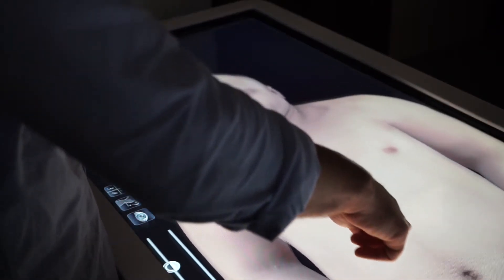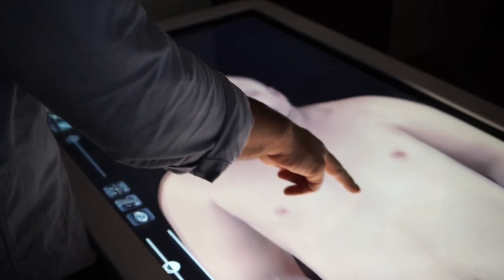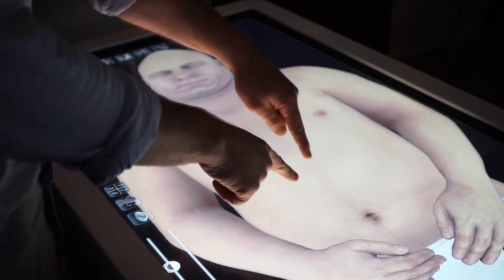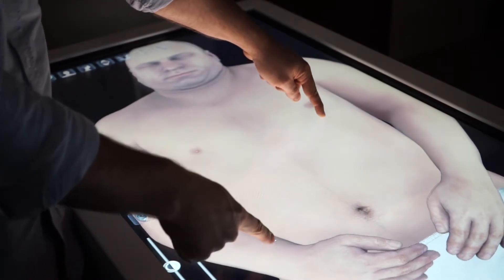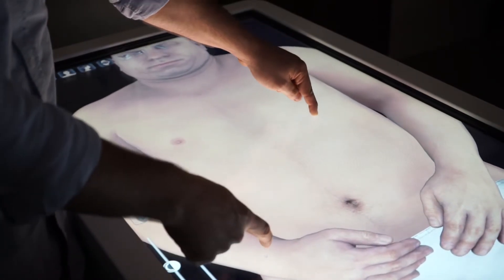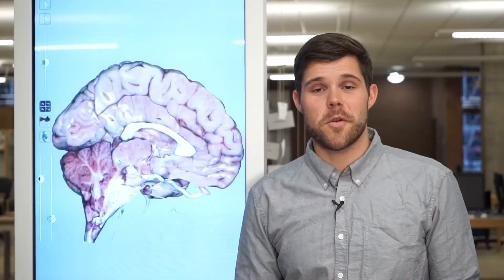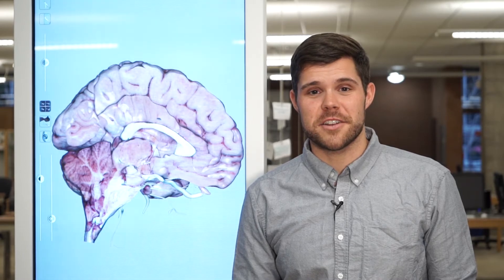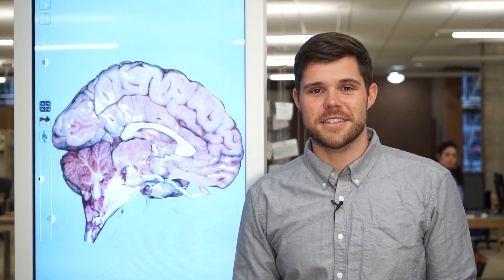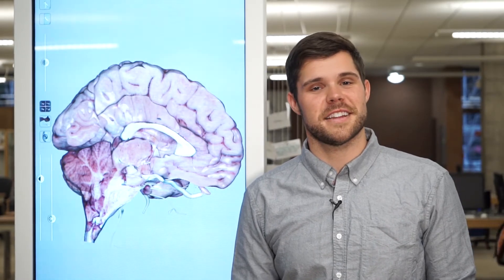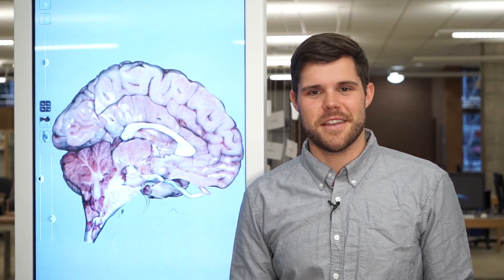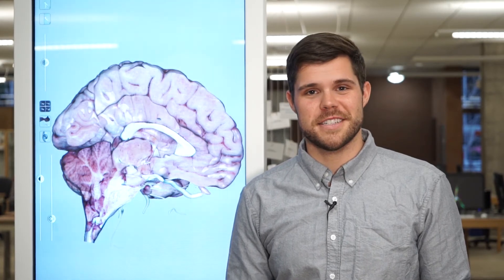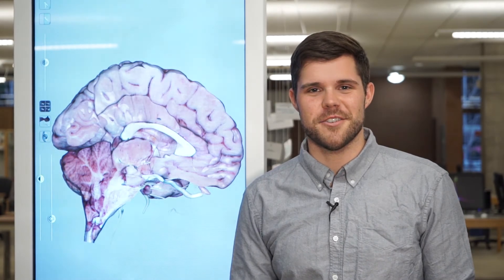Check out the Anatomage Table Basics video for a brief overview of the tools available for you to use. For more information, you can check out materials from the front desk or visit the Technology LibGuide on our website. You may also email a member of the library staff who can assist you.